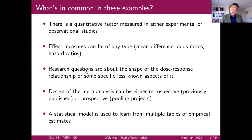The effect measure can be of any type: mean differences, odds ratios, hazard ratios. The research questions are about the shape of the dose-response relationship, typically for the average study or some specific aspect of it.